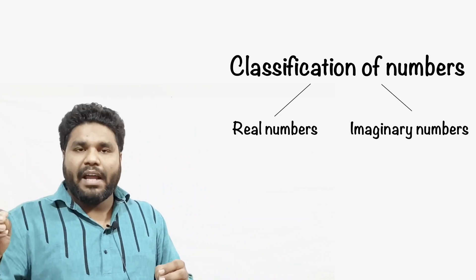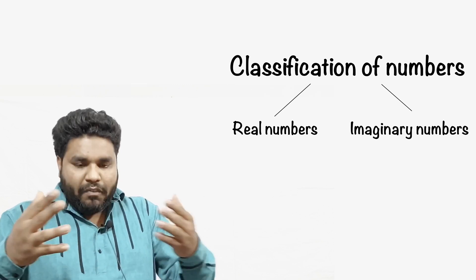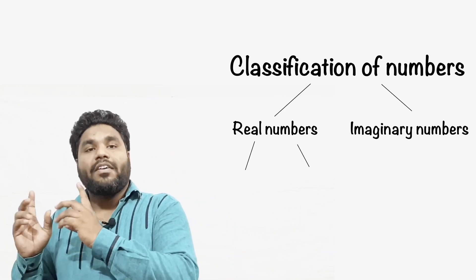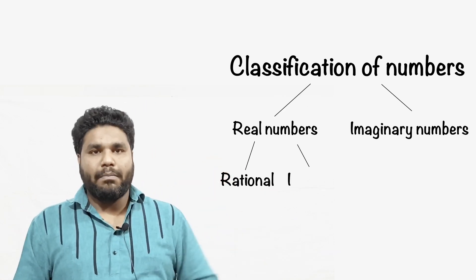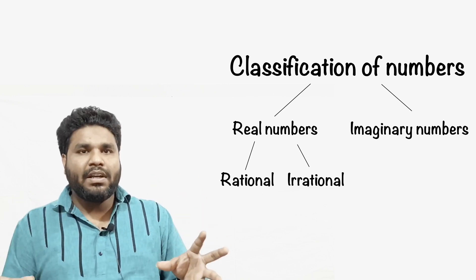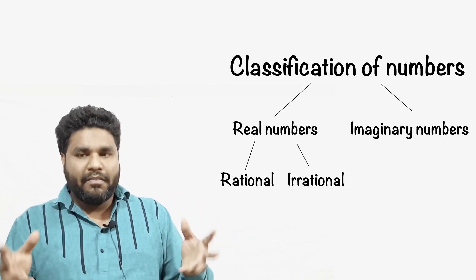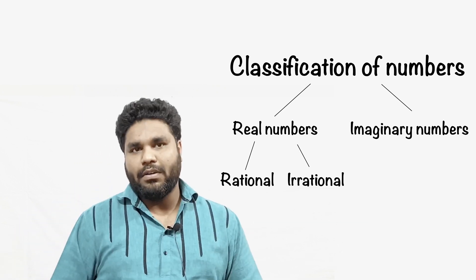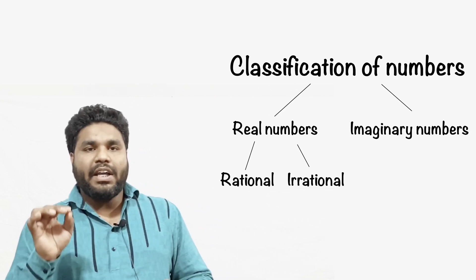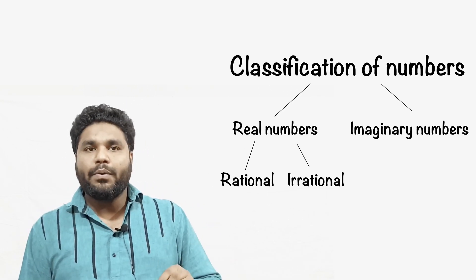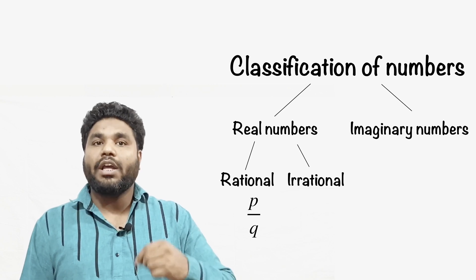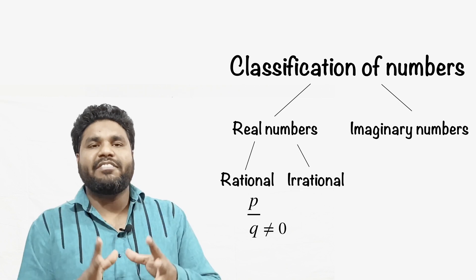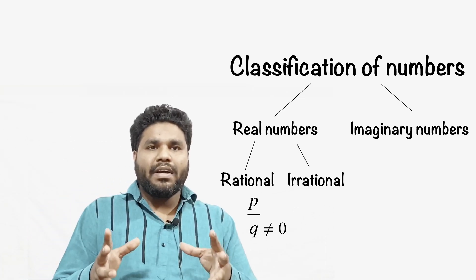Real numbers are further classified into two different parts: the first is rational numbers and the second is irrational numbers. To understand rational and irrational better, let us define them. A rational number is a number which is in the form of p/q, where p and q are integers and q is not equal to 0. This is the universal definition of a rational number.